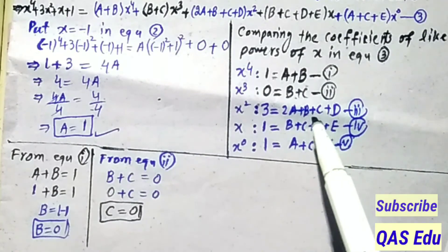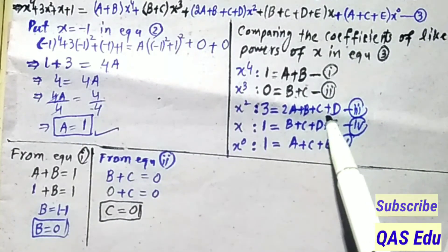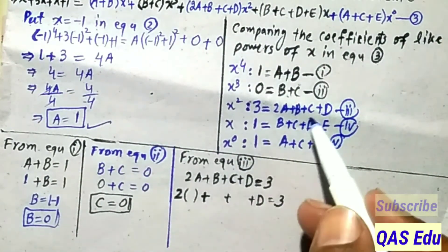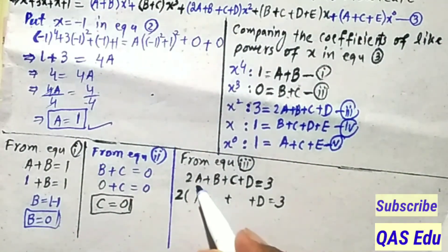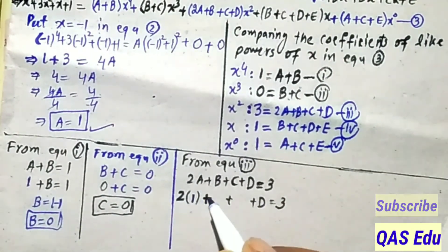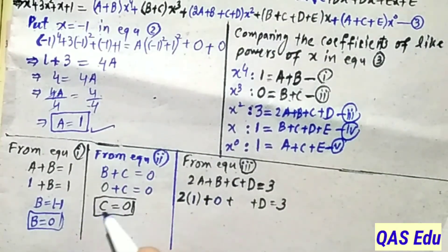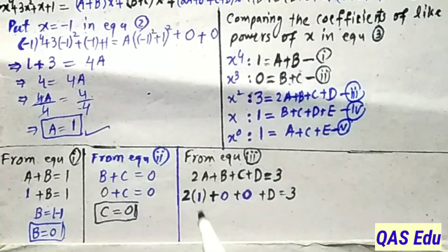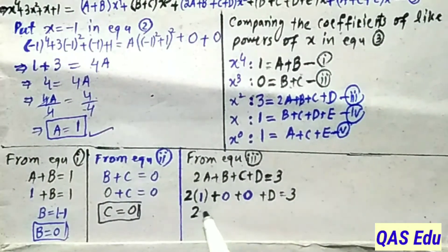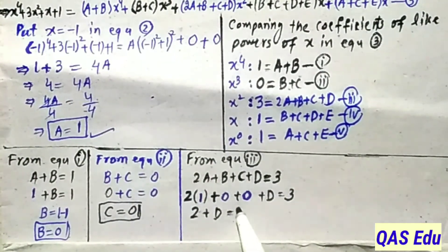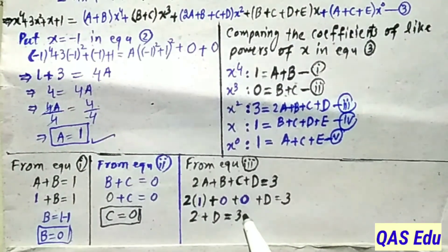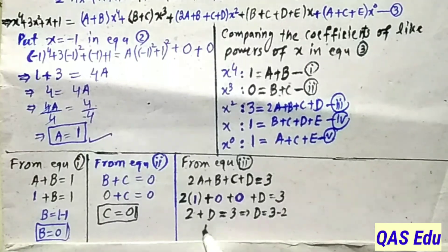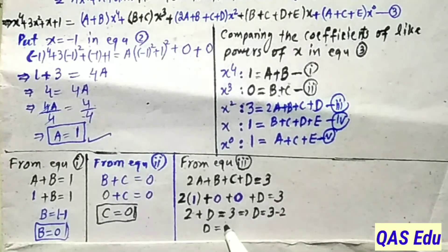Now putting A, B, C values into equation number 3: 2A + B + C + D = 3. Substituting A = 1, B = 0, C = 0: 2(1) + 0 + 0 + D = 3, so 2 + D = 3. Moving 2 to the right gives D = 3 - 2 = 1.